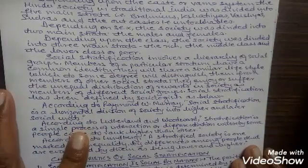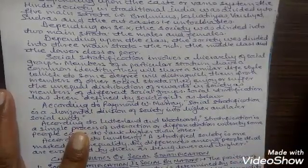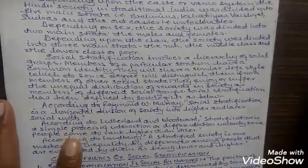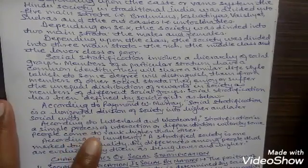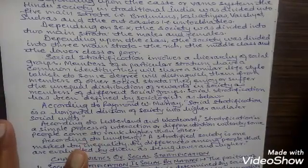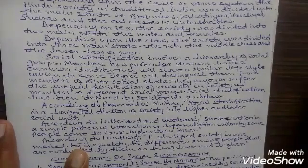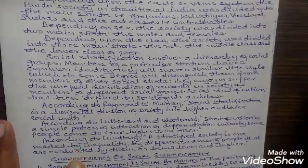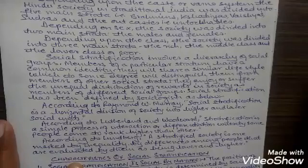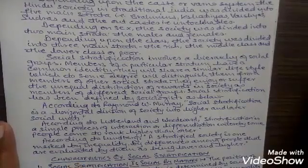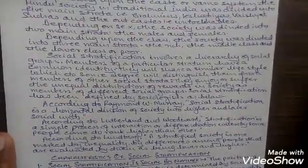Social stratification has been defined by sociologists as follows. According to Raymond W. Murray, social stratification is a horizontal division of society into higher and lower social units. According to Luther, Land and Woodward, stratification is a simple process of interaction or differentiation whereby some people come to rank higher than others. According to Lugberg, a stratified society is one marked by inequality — by differences among people that are evaluated as being lower and higher.